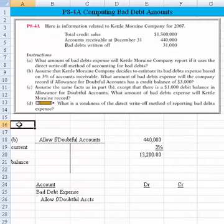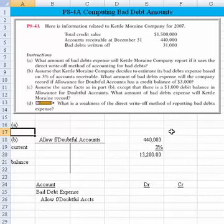Let's see if we can work Part A. Part A is the most straightforward part. It says, what amount of bad debt expense will Kettle Moraine Company report if it uses the direct write-off method? With the direct write-off method, we record directly to the P&L the amount of bad debt expense that we incurred.